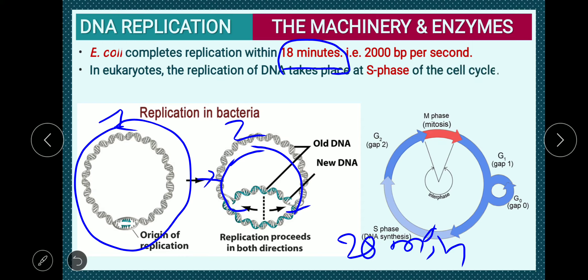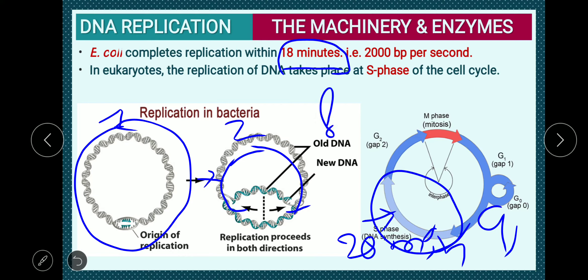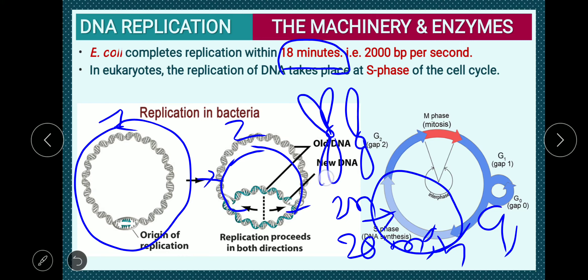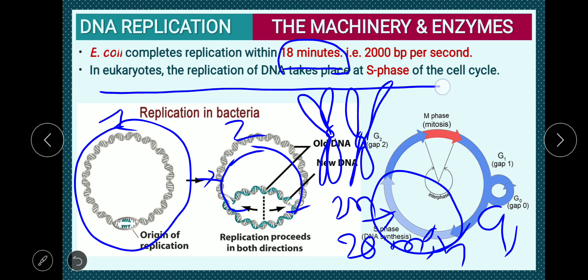In eukaryotes, replication of DNA takes place at the S phase of the cell cycle. This is G1 phase, S phase, and G2 phase. During S phase, the single-copy chromosome — in monad form — becomes replicated so that the chromosome appears in diad form. The DNA synthesis of the S phase in eukaryotic cells proceeds in a similar fashion, with both paternal and maternal chromosomes being replicated.